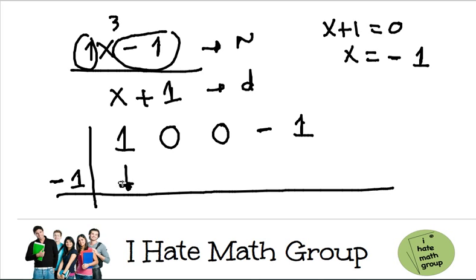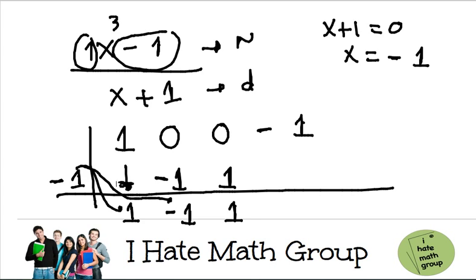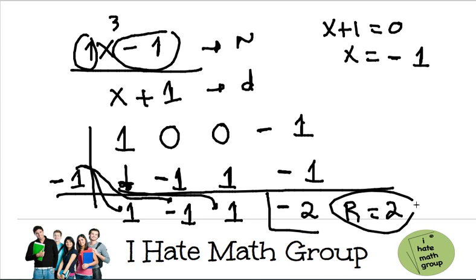Remember, the first step is to lower the first number, which is 1. Then: negative 1 times 1 is negative 1. Zero minus 1 is negative 1. Negative 1 times negative 1 is 1. Zero plus 1 is 1. Negative 1 times 1 is negative 1. Finally, negative 1 minus 1 equals negative 2. The remainder is negative 2. Since the remainder is not 0, x equals negative 1 is not a factor of x cubed minus 1.